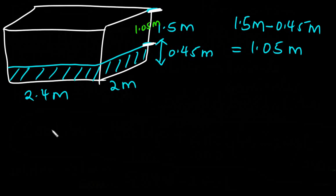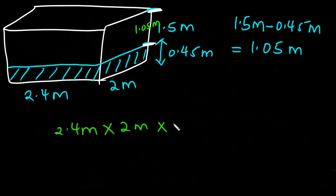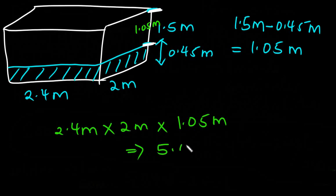So the remaining amount of water to fill this tank — let's first find the volume. The volume remaining is 2.4 meters times 2 meters times the remaining height of 1.05 meters. When we multiply this, it gives 5.04 cubic meters.